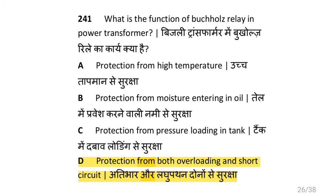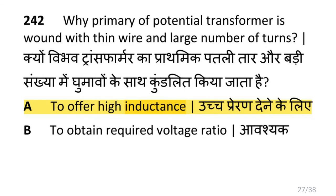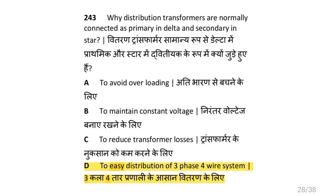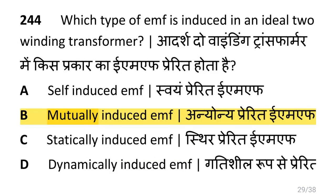What is the function of Buchholz's relay in a power transformer? That is to protect from both overloading and short circuit. Why is the primary of a potential transformer wound with thin wire and a large number of turns? That is to offer high inductance for induction. Why are distribution transformers normally connected as primary in delta and secondary in star? For easy distribution of the three-phase four-wire system.